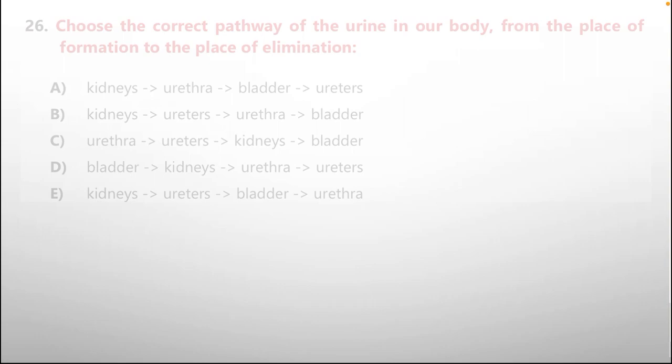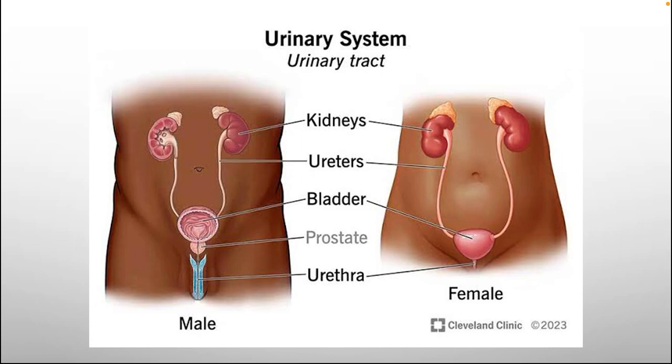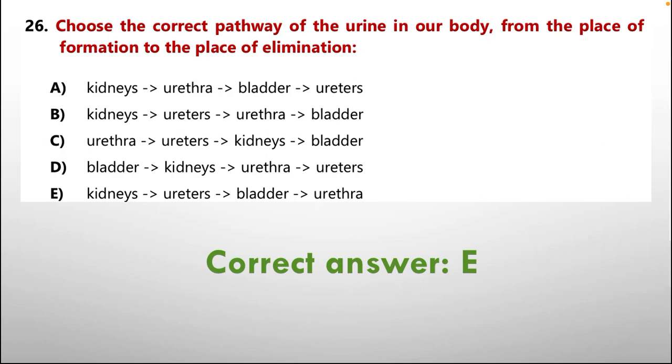For this, what is the order? We are going through the urinary system diagram. So, this is the urinary tract. The first is the kidneys, then ureters, then the third one, bladder, and the last one is urethra. Both in the male and female, same system available. So, according to that, option number E: Kidneys, ureter, bladder, and urethra is the right option.